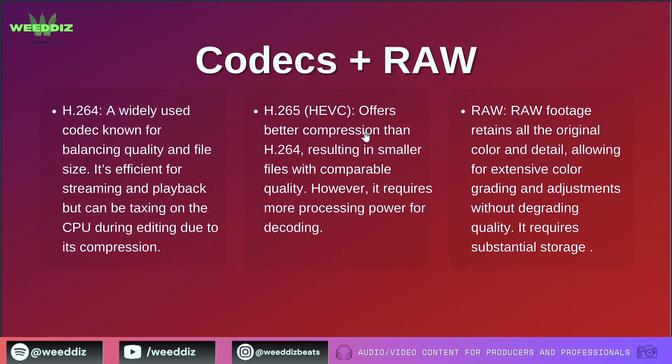Now let's talk about codecs. A codec, short for coder-decoder, is a tool or software used to compress and decompress video files. We have talked about All-I and Long GOP, and those are compression strategies that can be applied using codecs like H.264. H.264 and H.265 are the codecs themselves, which define how the video data is handled. When you record or edit a video, the file can be very large, so a codec compresses the video to make the file size smaller, making it easier to store and share. When you want to watch the video back, the codec decompresses it so that it can be played back smoothly.